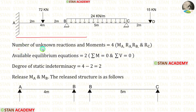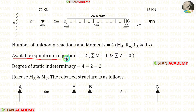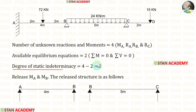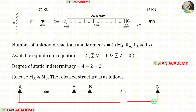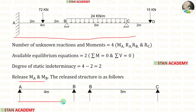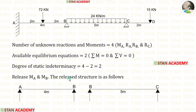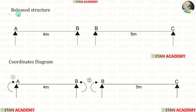In this beam, the number of unknown reactions and moments are 4: MA, RA, RB, and RC. The available equilibrium equations are 2 — Sigma M = 0 and Sigma V = 0. The degree of static indeterminacy is equal to 4 minus 2, which gives 2. Let us release MA and MB. This is our released structure. When we release MA and MB, this continuous beam becomes 2 different simply supported beams. In the released structure, no need to consider the overhanging span.